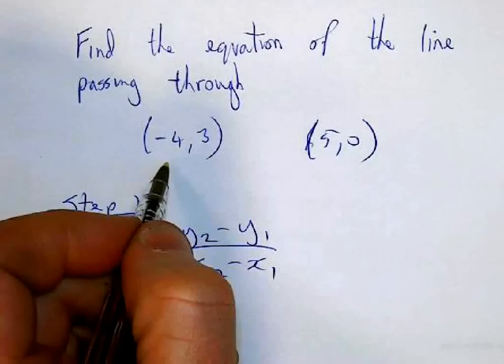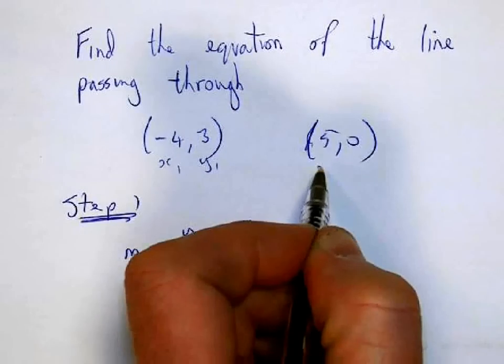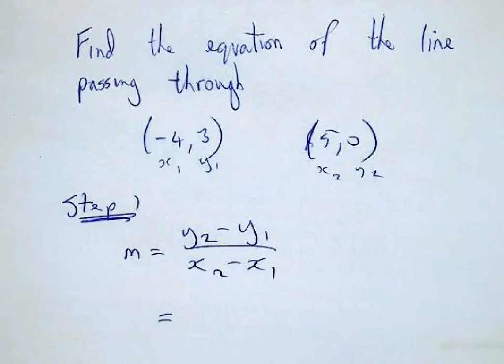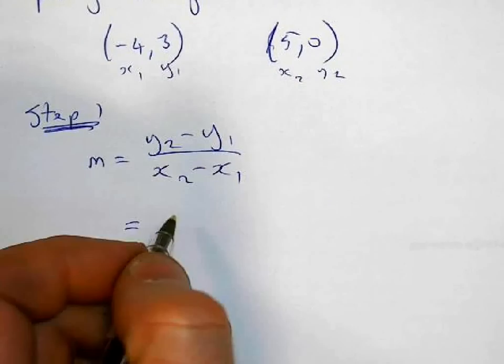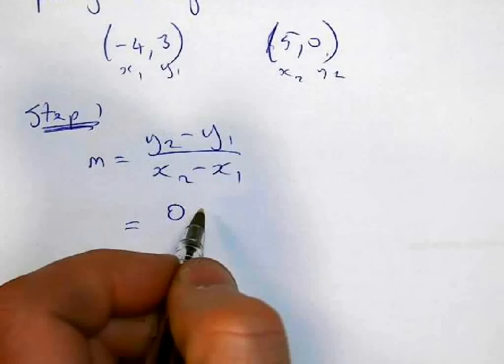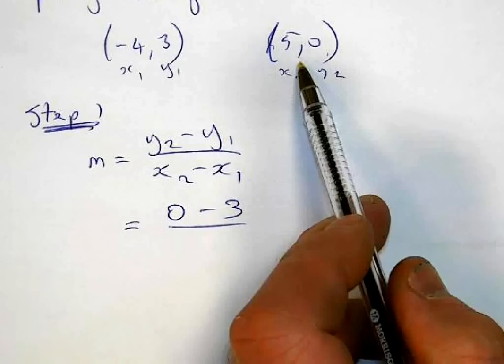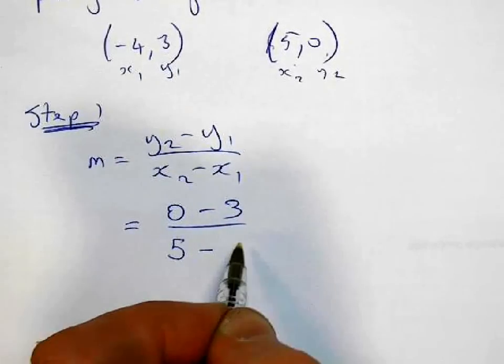Again, we label them x1, y1, x2, y2. So we're going to have 0, take away minus 3. And then we're going to have 5, and we're going to take away a minus 4.